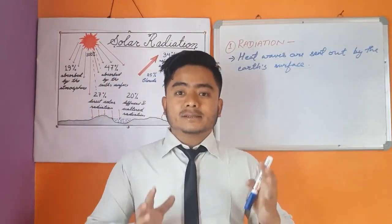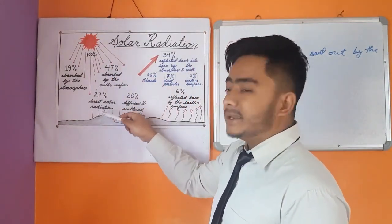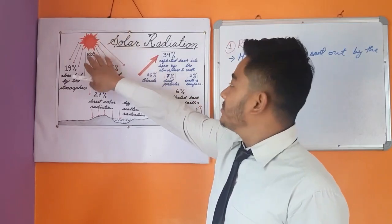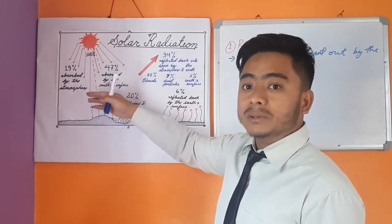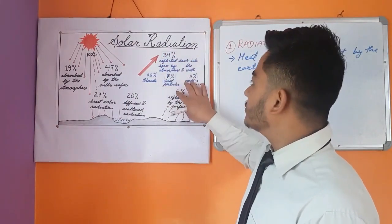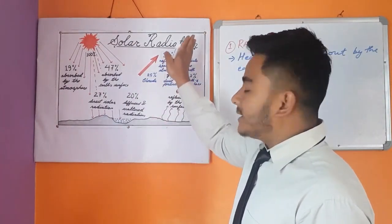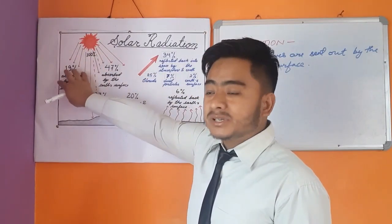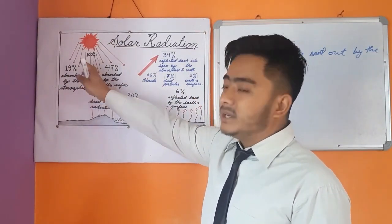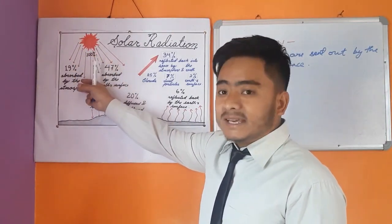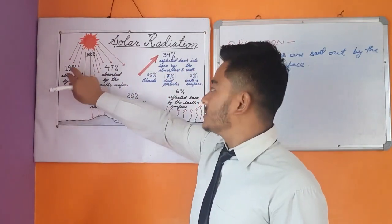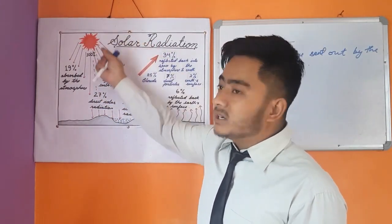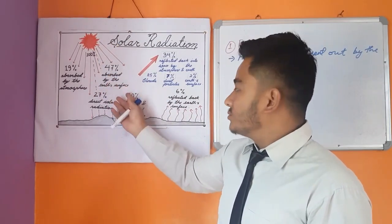As we all know, the Sun is the main source of heat and energy on the Earth's surface. As we studied in the previous session, the Sun gives 100% of incoming solar radiation, out of which 34 plus 6%, that is total 40%, is reflected back by the Earth's surface and atmosphere. 19% is directly absorbed by the atmosphere, and as a result 47% of the incoming solar radiation directly reaches the Earth's surface.